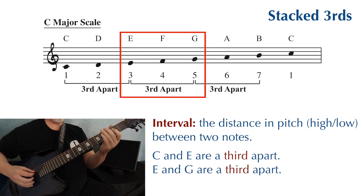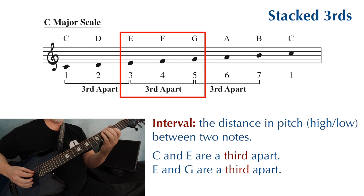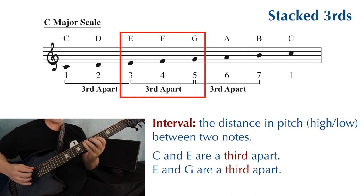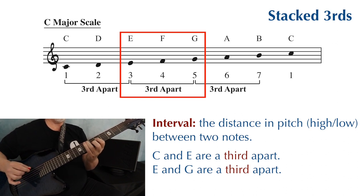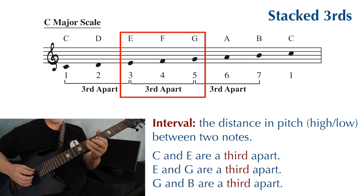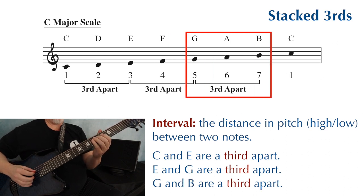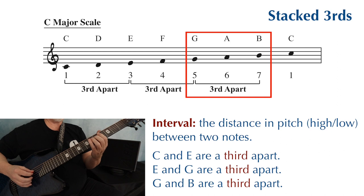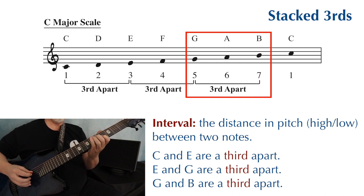From E to G, we count three notes — E, F, G — and E and G are also a third apart. And from G to B, we count three notes — G, A, B — so G and B are a third apart.